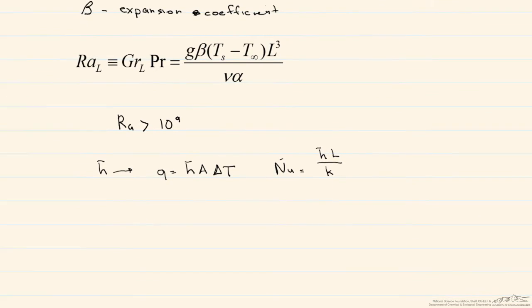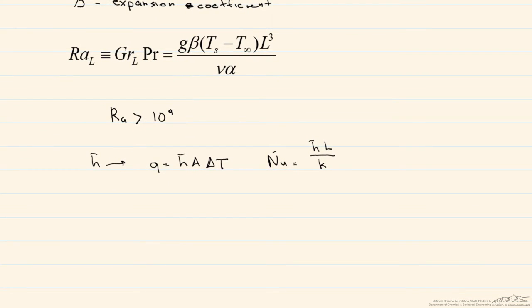As I said, probably the most general correlation for the Nusselt number is some constant times the Rayleigh number raised to some n. So these constants, C and N, can be looked up, but in general, N equals 1/4 if the flow is laminar, and it equals 1/3 if the flow is turbulent.